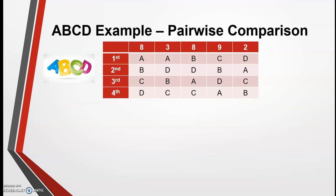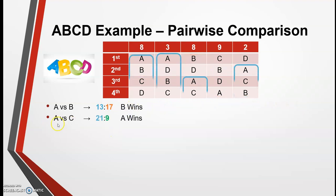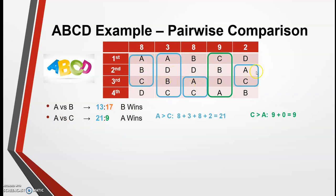Let's look at our ABCD example and use Copeland's Method to determine the winner. For A versus B: in columns 1, 2, and 5, A was ranked higher than B, so A gets 13 votes. In columns 3 and 4, B was ranked higher, so B gets 17 votes — B wins that comparison. For A versus C: A is ranked ahead of C in columns 1, 2, 3, and 5, so A gets 8 + 3 + 8 + 2 = 21 votes. C is ranked above A in column 4, so C gets 9 votes — A wins 21 to 9.